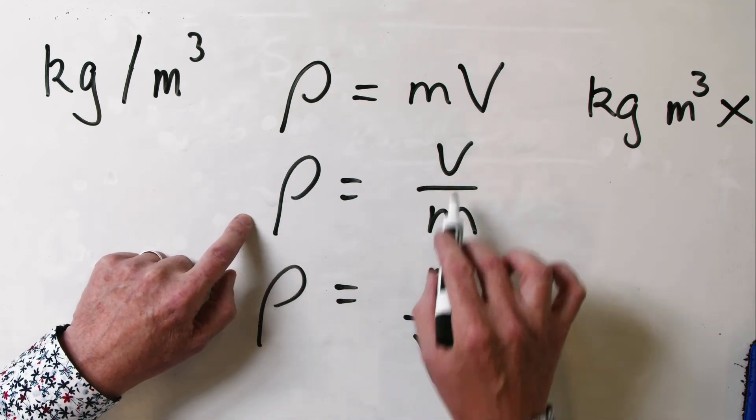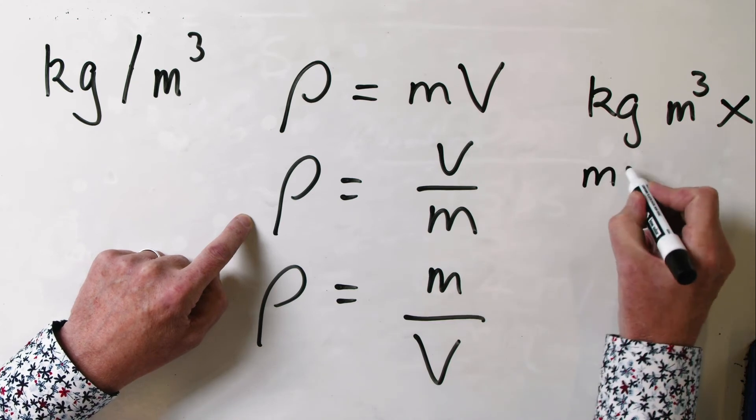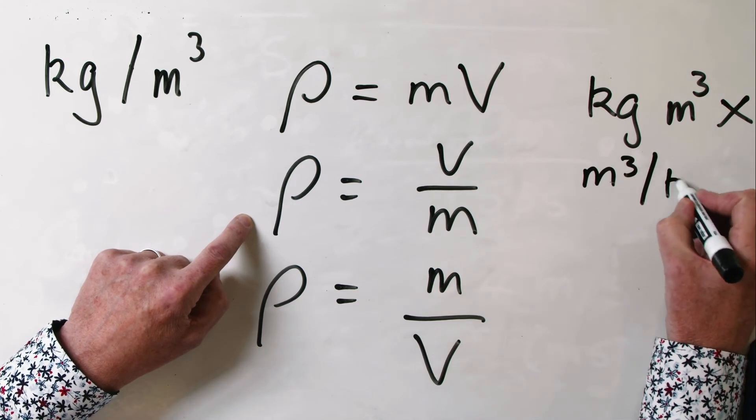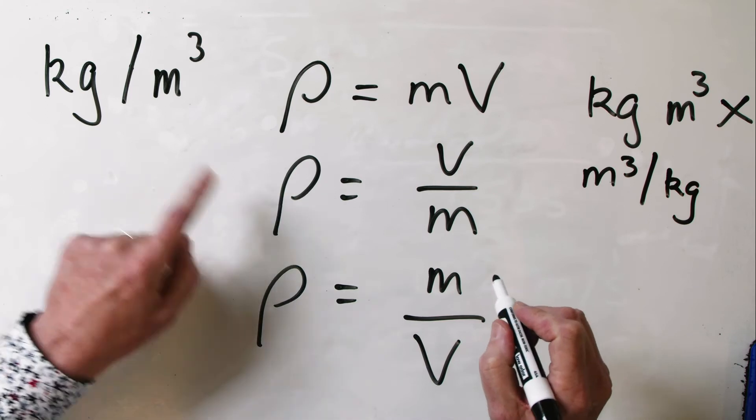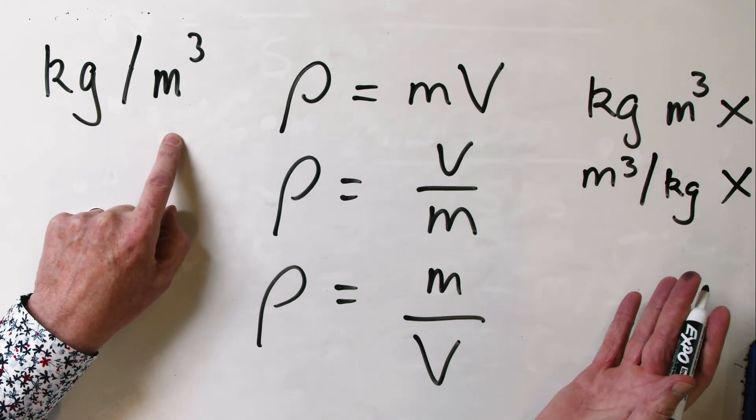What about if we divide volume by mass? We're going to get units of cubic metres per kilogram, which is not kilograms per cubic metre, and so that must be wrong.